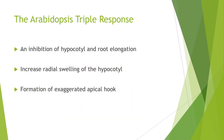The ethylene signaling components were mainly discovered through analysis of the Arabidopsis triple response — the responses you see when you subject a plant to a lot of ethylene. What you see is inhibition of hypocotyl and root elongation, increased radial swelling of the hypocotyl, and formation of an exaggerated apical hook. Researchers then knocked out genes to see if these features disappeared, identifying genes important in ethylene signaling.